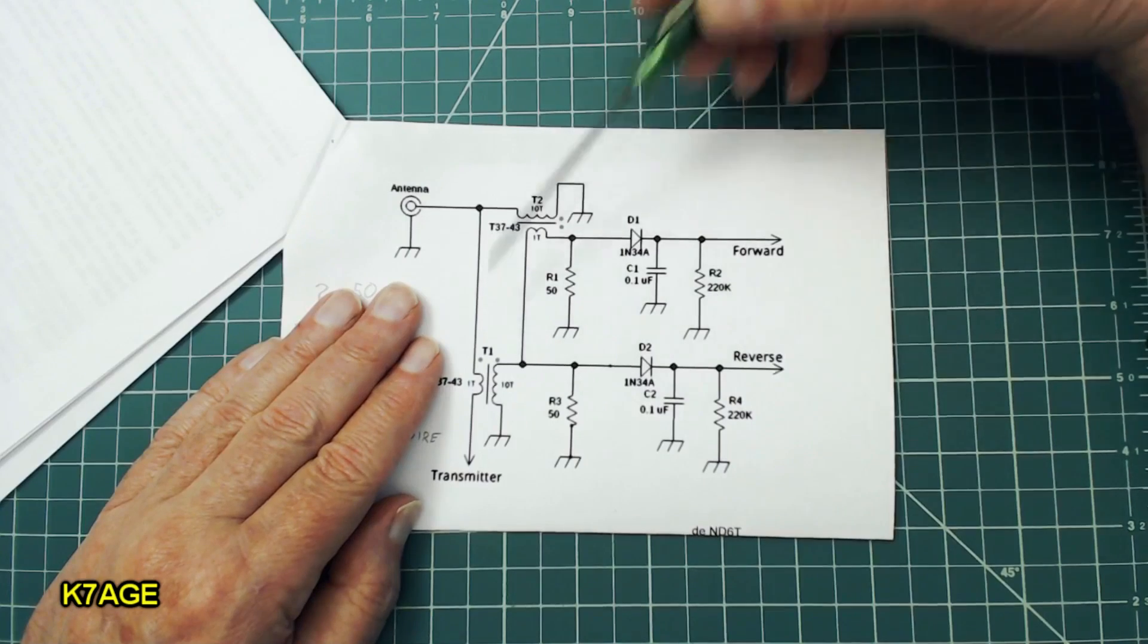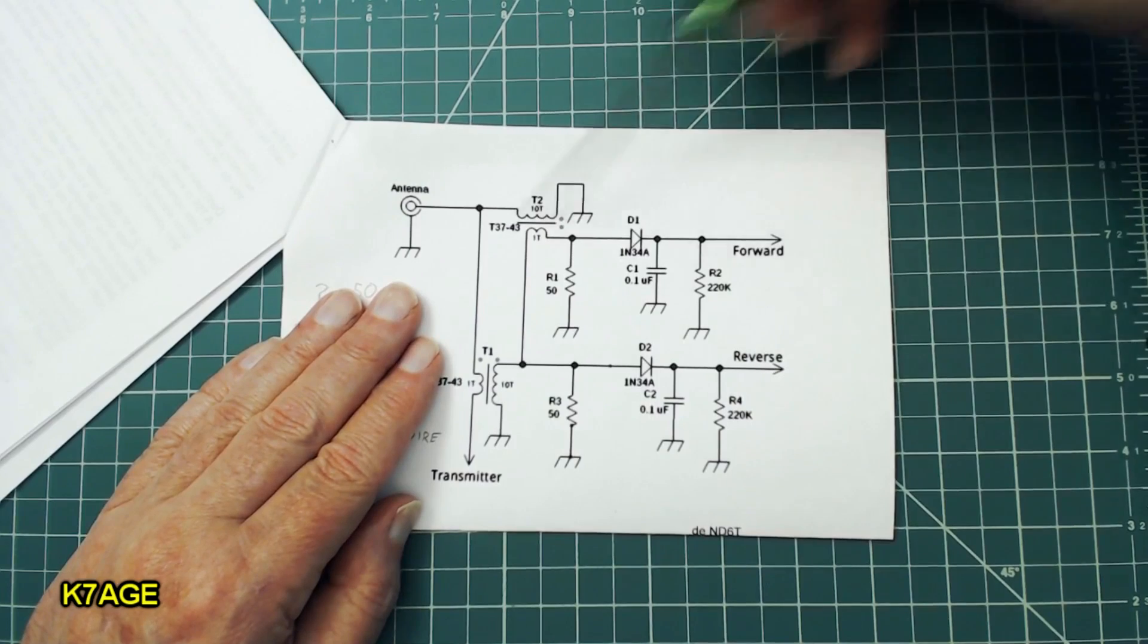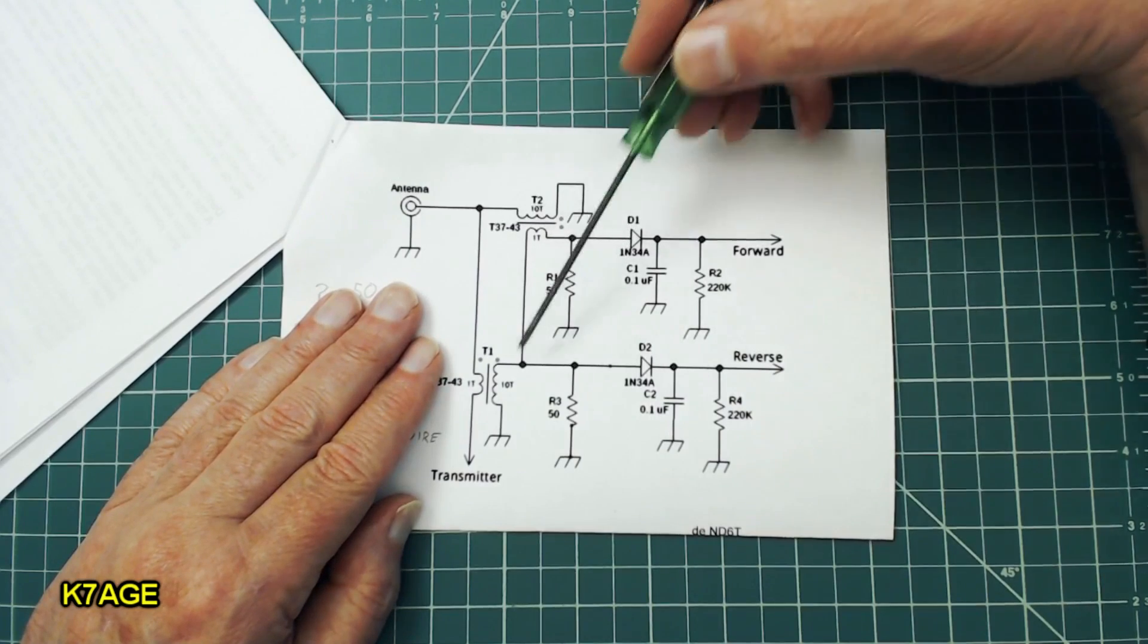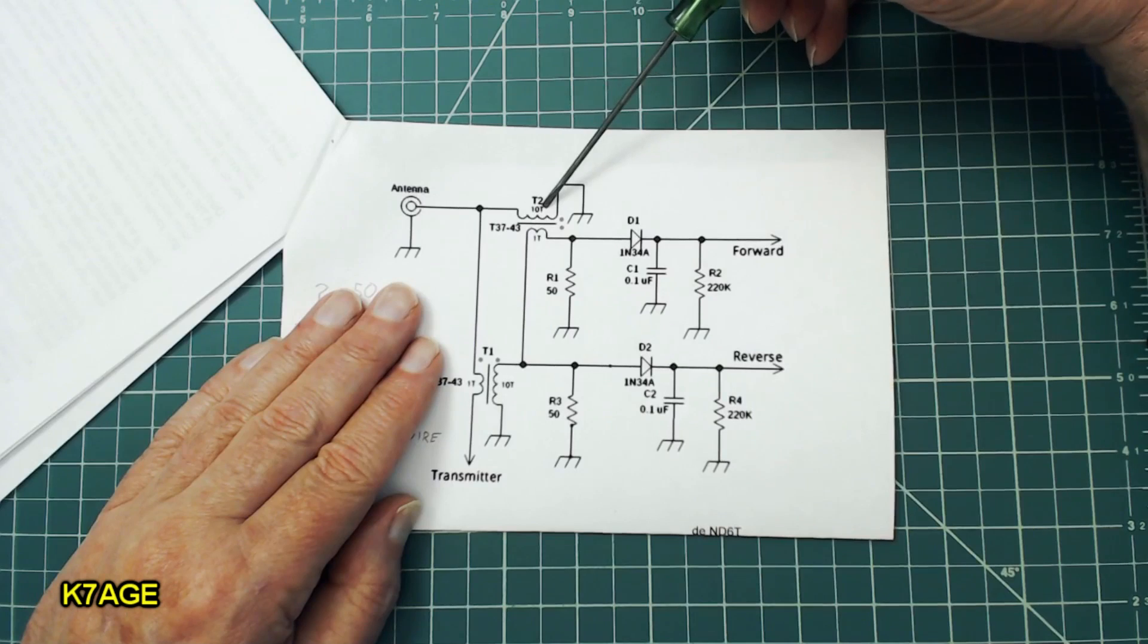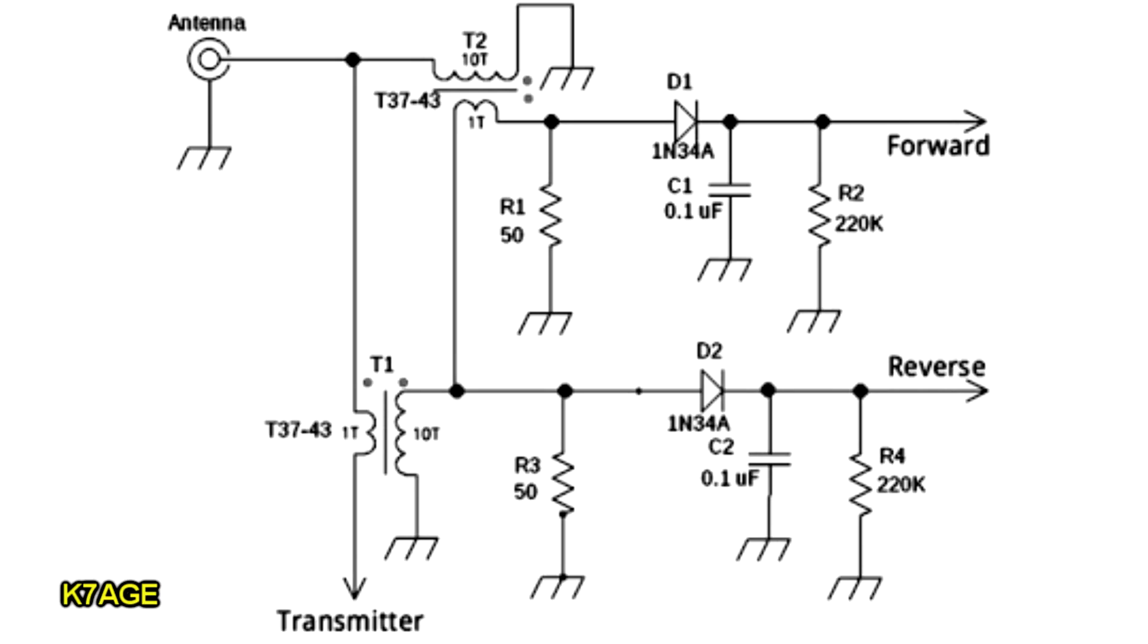So this is a real common SWR meter schematic, although it's not showing the metering circuitry, just the bridge part. And it's based around two toroidal transformers with one turn on one side and 10 turns on the other side.